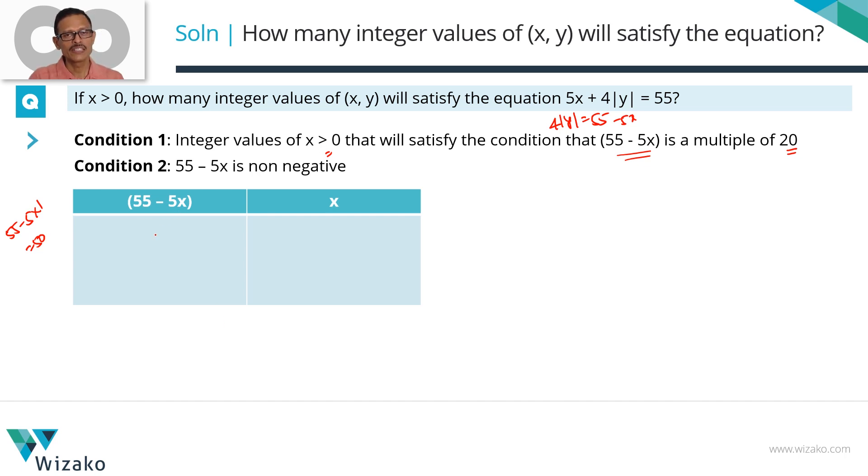55 - 5x, what is it? We'll start from the highest possible value. 40 is the largest value which is less than 55, which is a multiple of 20. The next number that's a multiple of 20 is 20. I don't think we have any more positive values. But note one thing, 55 - 5x is not necessarily positive. It can also be 0. The question says that 55 - 5x has to be non-negative. Is 0 a multiple of 20? Certainly. 0 is a multiple of any number. So we should not miss out this value.